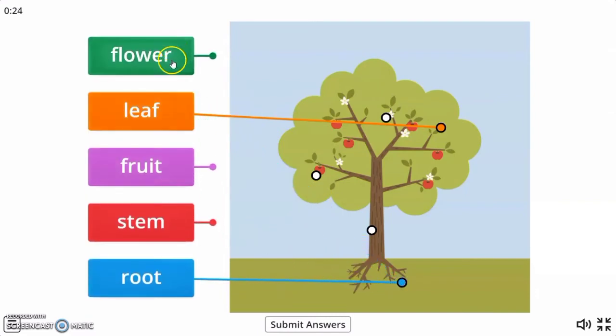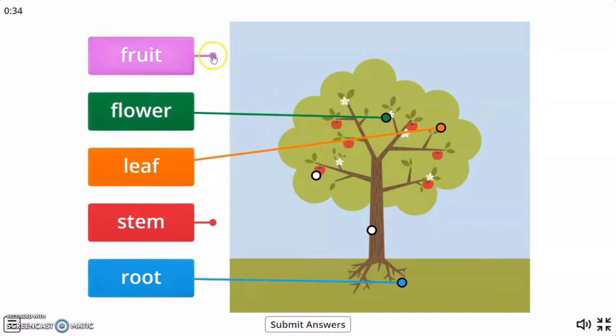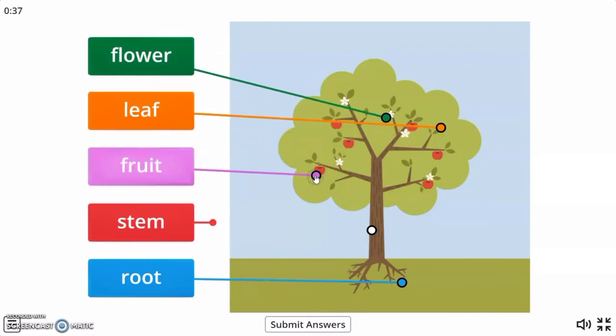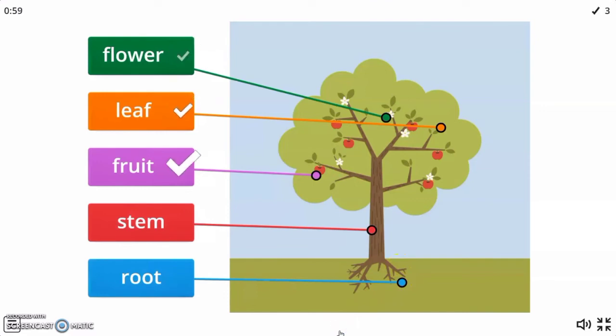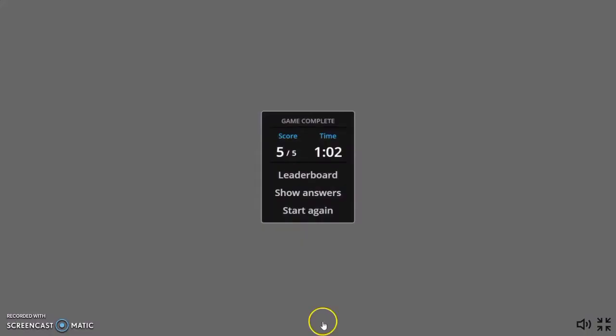Next is flower. Where is the flower of the tree? Very good. This one. Next is fruit. Very good. This is the fruit of the tree. And the last is stem. This is the stem of the tree. Again, this is the flower. Leaf. Fruit. Stem. And root. Okay. Let's submit the answer. Well done, kids. You get a perfect score. 5 over 5.